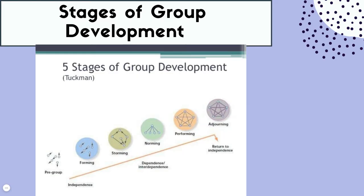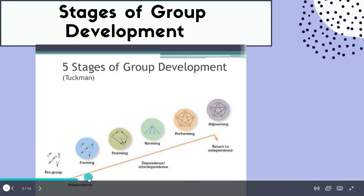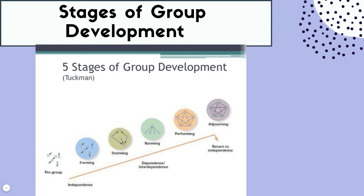The first official stage is forming. In this stage, the group is coming together, starting to understand what the purpose is, and group members are meeting one another. There's still a lot of independence at this point because the group has not had cohesion yet. In the forming stage, people are all oftentimes very non-confrontational because it's your first couple of experiences meeting one another, so people might not feel comfortable sharing their opinions or outwardly expressing their thoughts.